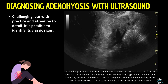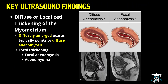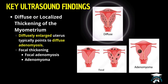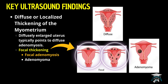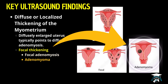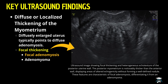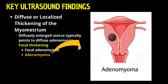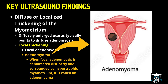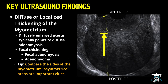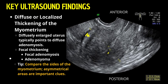Let's talk about the main ultrasound findings you'll see with adenomyosis. First, let's examine the myometrium, which can exhibit either diffuse or focal thickening. A diffusely enlarged uterus typically points to diffuse adenomyosis. When you notice focal thickening, it's crucial to differentiate between focal adenomyosis and an adenomyoma. Focal adenomyosis involves localized infiltration of endometrial tissue into the myometrium without forming a distinct mass. An adenomyoma, on the other hand, is a well-defined tumor-like mass within the myometrium, composed of ectopic endometrial tissue surrounded by hypertrophic smooth muscle. A valuable tip is to compare the thickness of both sides of the myometrium — if one side is thicker, that asymmetry is often a key clue, potentially indicating focal adenomyosis or the presence of an adenomyoma.